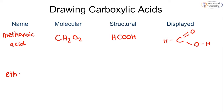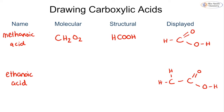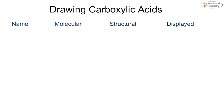Moving to the second member, ethanoic acid — the most commonly asked about in exams. We have our functional group COOH connected to a carbon, then fill the remaining bonds with hydrogens to ensure each carbon has four bonds. That gives a structural formula of CH3COOH and a molecular formula of C2H4O2. Notice that the number of oxygens never changes — I will always have two oxygens; only the carbons and hydrogens change.